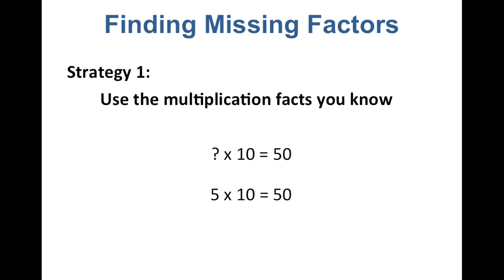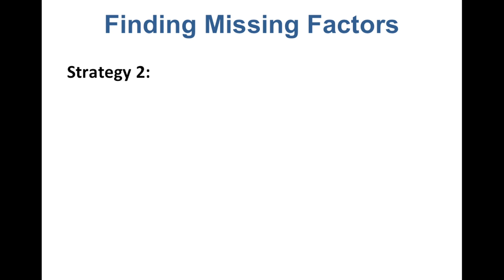If you're a student who doesn't feel confident in your multiplication facts quite yet, don't worry, we have two other strategies that can help you solve these missing factor problems. Our second strategy for finding a missing factor in a multiplication problem is to use the factor that you know. This strategy uses the skip counting skill that we used in lesson 1, when we found multiples of numbers.